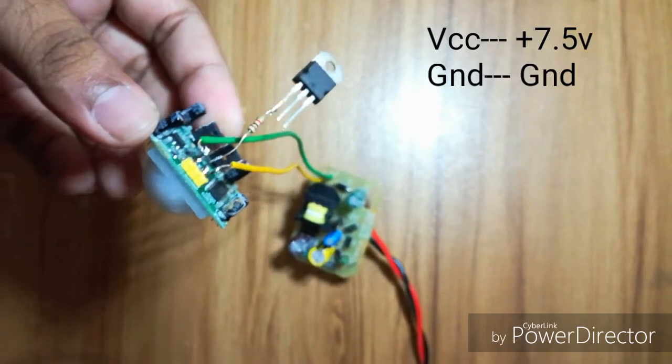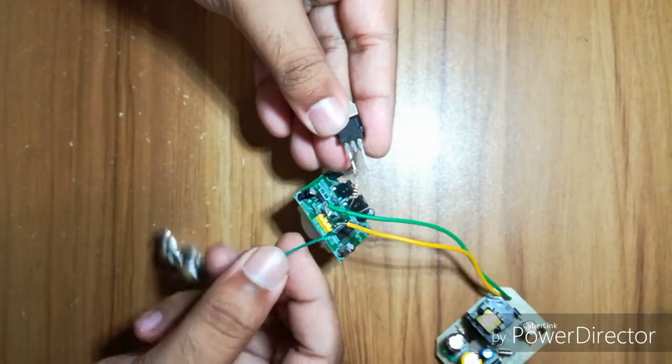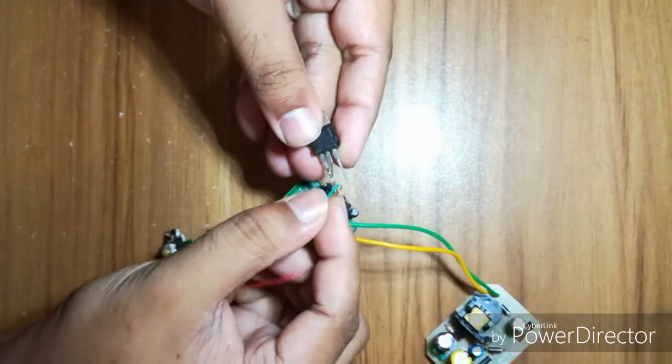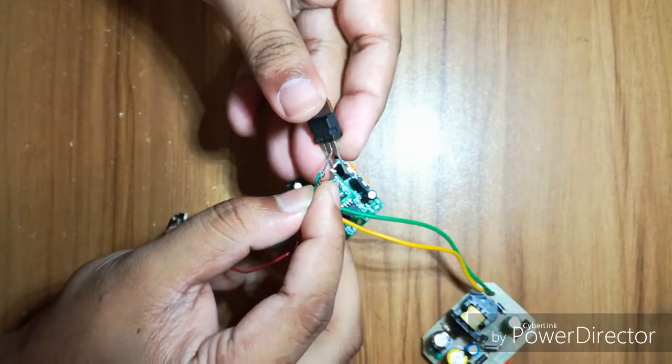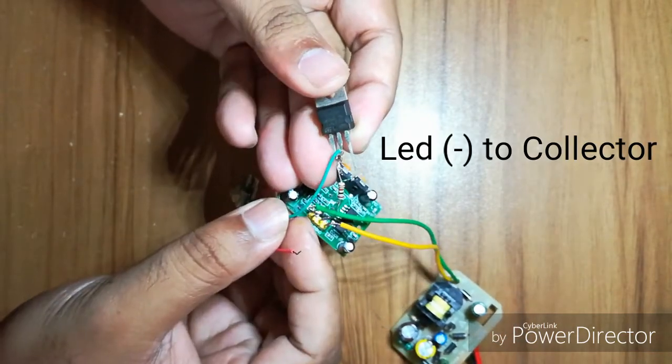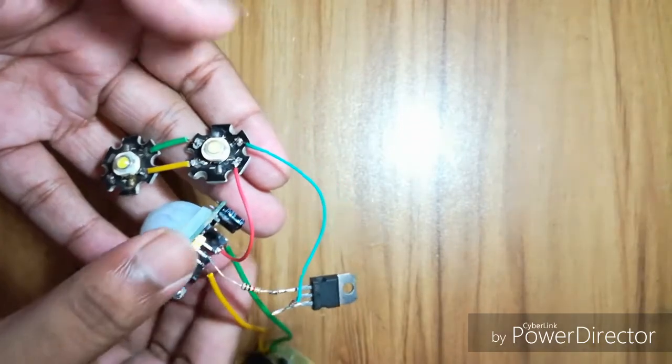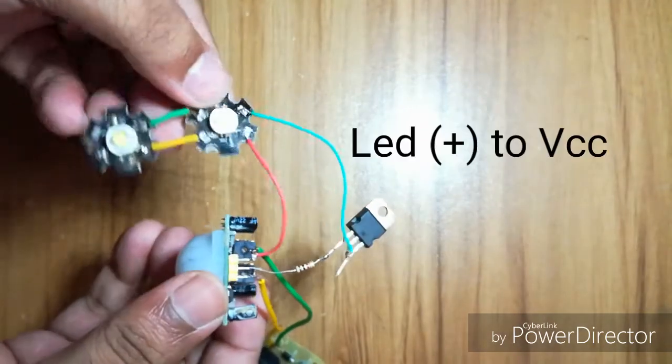The negative of the LED goes to the collector of the transistor, which is the middle pin. And the positive of the LED is going to be connected with the plus of the power supply.